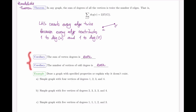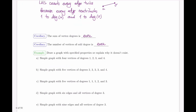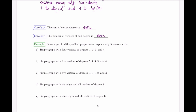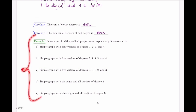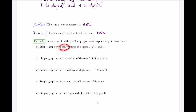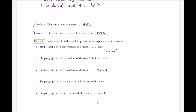These observations help determine when a graph with specified degrees exists. A simple graph with four vertices and degrees 1, 2, 3, 4 is impossible — a vertex of degree 4 would need to connect to four others, but there are only three other vertices in a four-vertex graph, so that degree is too high.